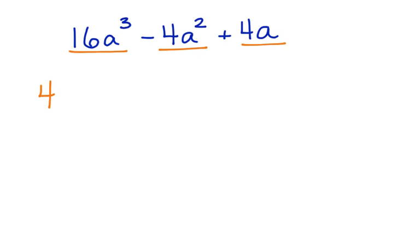Now let's look at the variable and the exponents. We can factor an a out of this one, an a out of this one, and an a out of this one. So we can take out 4a.